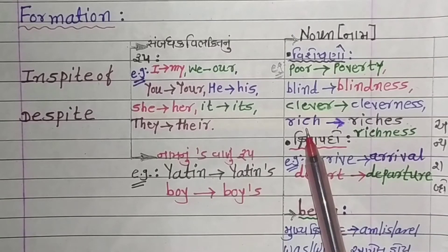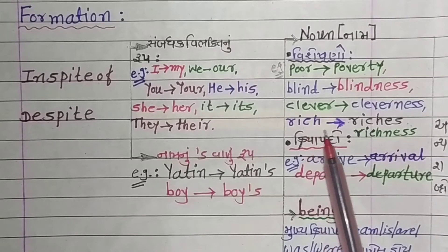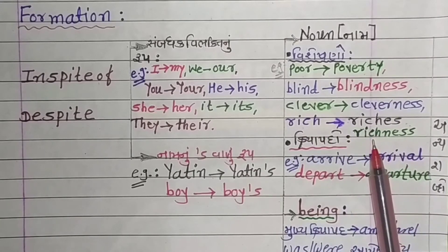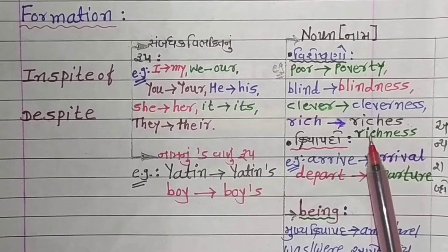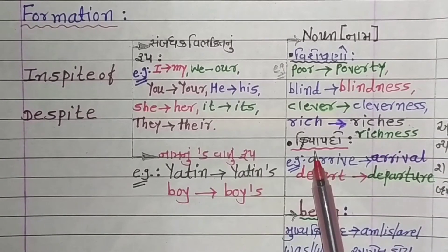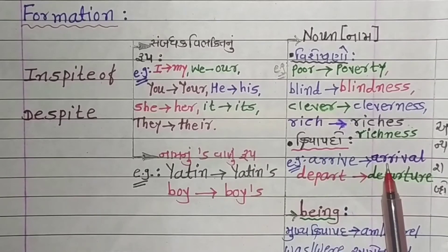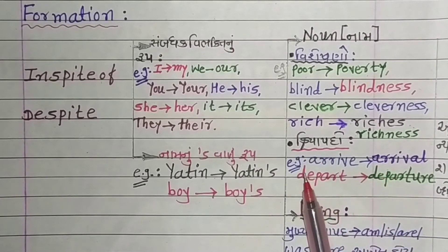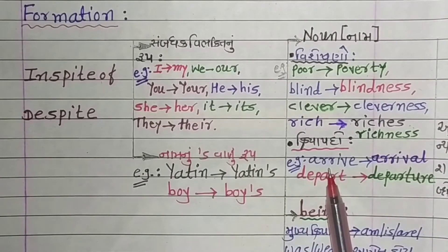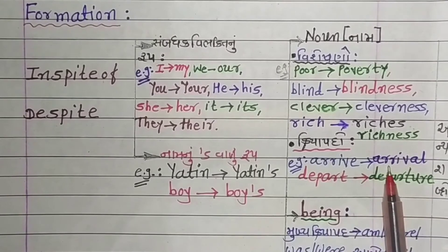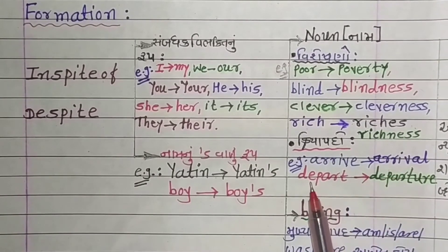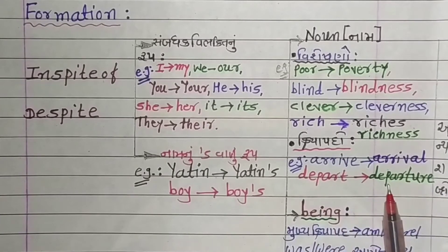There are adjectives or verbs whose noun form (name) you must know. For example: 'rich' or 'richness'; 'to arrive' — its noun is 'arrival' (aaganam); 'to depart' — its noun is 'departure.'